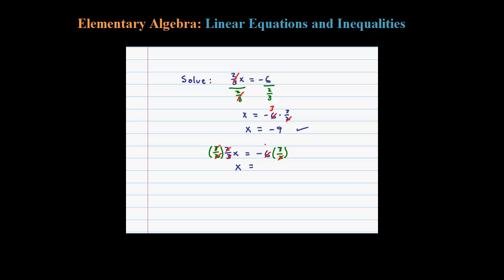On this side, certainly again 2 goes into 6 three times, so when we reduce that we get negative 9. So by multiplying both sides by the reciprocal, you still retain the equality and you can do that problem in one step. Either way, the answer comes out to be negative 9.